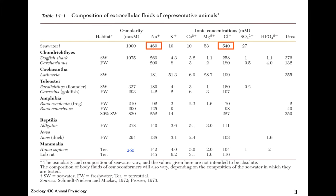To review: seawater is very salty with a total osmolarity of about 1000 milliosmoles, mostly sodium and chloride ions. The other molecules are a minority contributor — it's mostly sodium chloride.